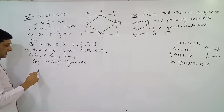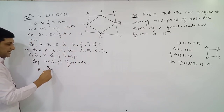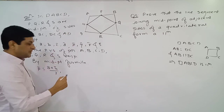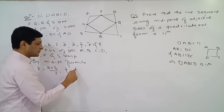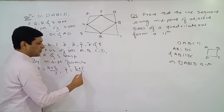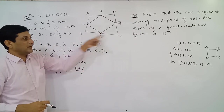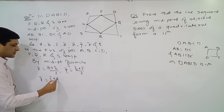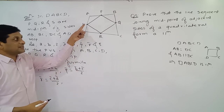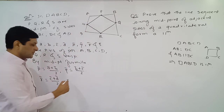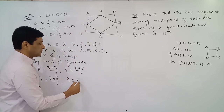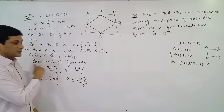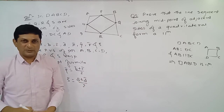By the midpoint formula: P̄ equals Ā plus B̄ upon 2; Q̄ equals B̄ plus C̄ upon 2; R̄ equals C̄ plus D̄ upon 2; and S̄ equals Ā plus D̄ upon 2.